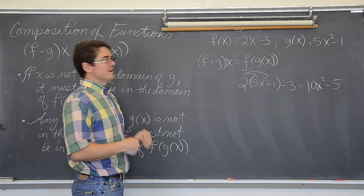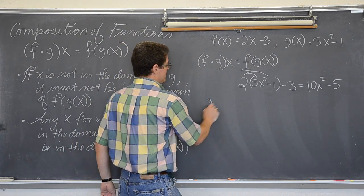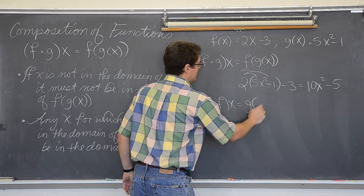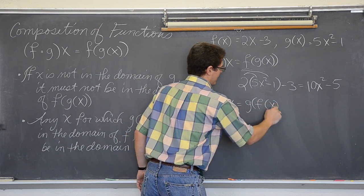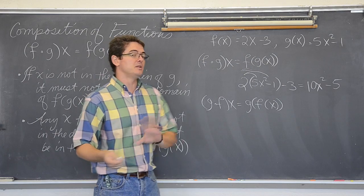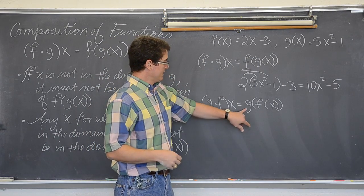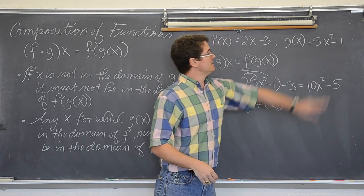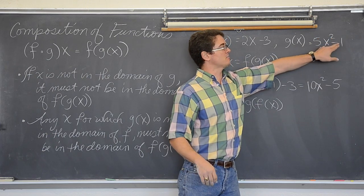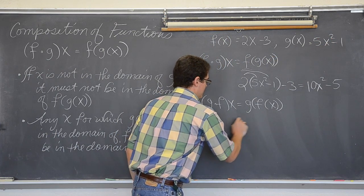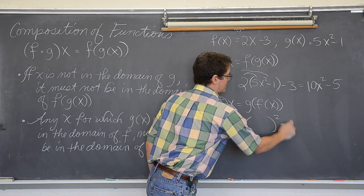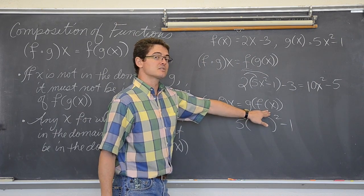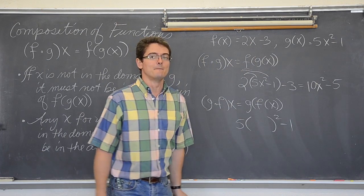Let's try it the other way and see what happens. What is g of f? Well, that is g of f of x. And we are going to just substitute it in the opposite direction. What is g? Well, glad you asked. It is 5 times something squared minus 1. So, it is 5 times something squared minus 1. What is that something you ask? It is f of x. And f of x is 2x minus 3.